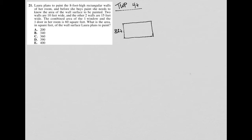Two walls are 10 feet wide. So I have two walls that are 10 feet by eight feet, right? Because we were already given the height, and now we're given the width. So I know I have this times two.